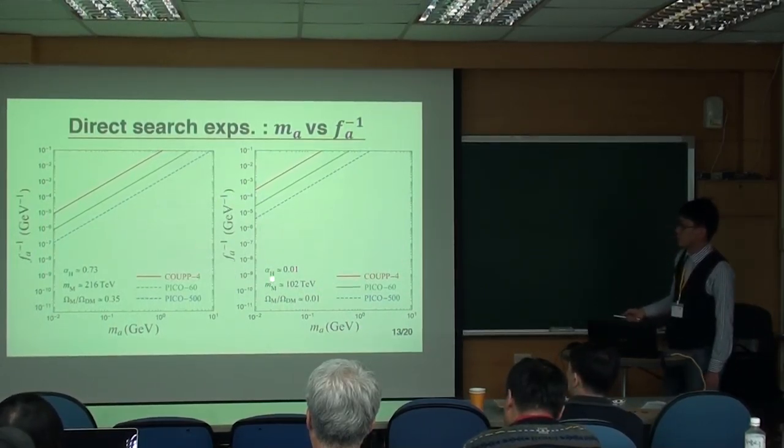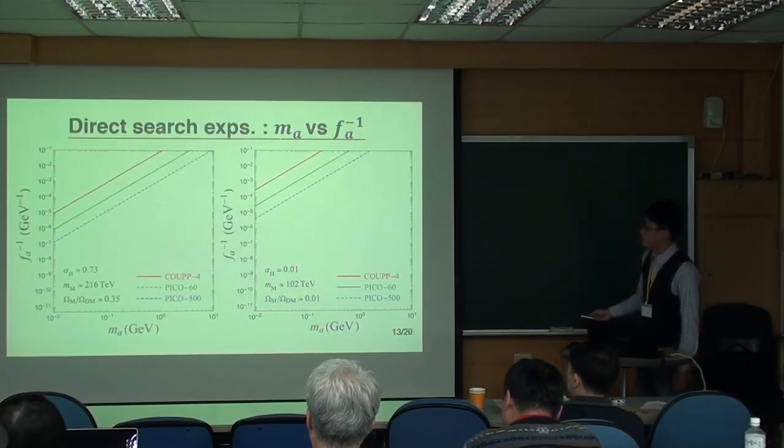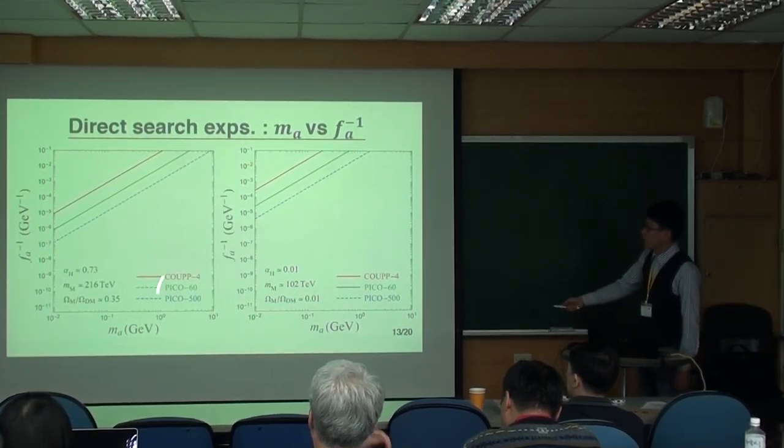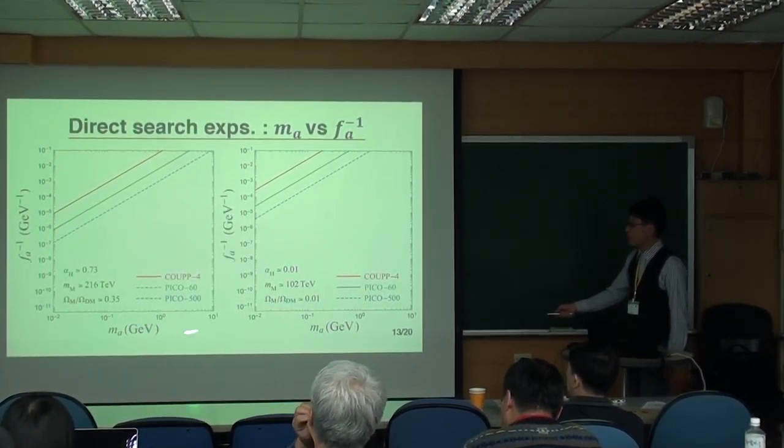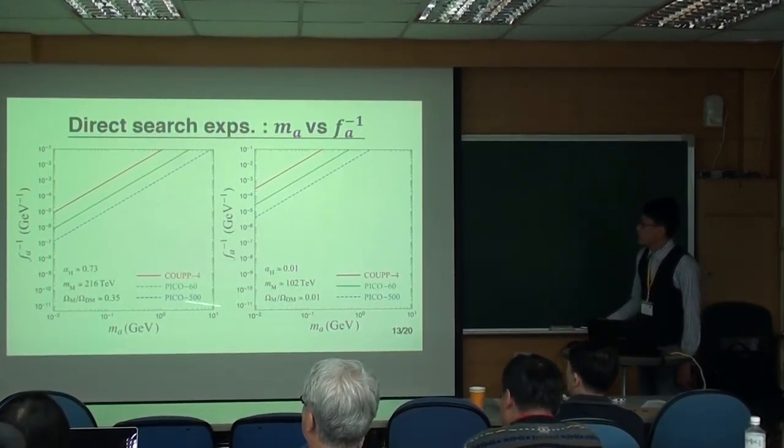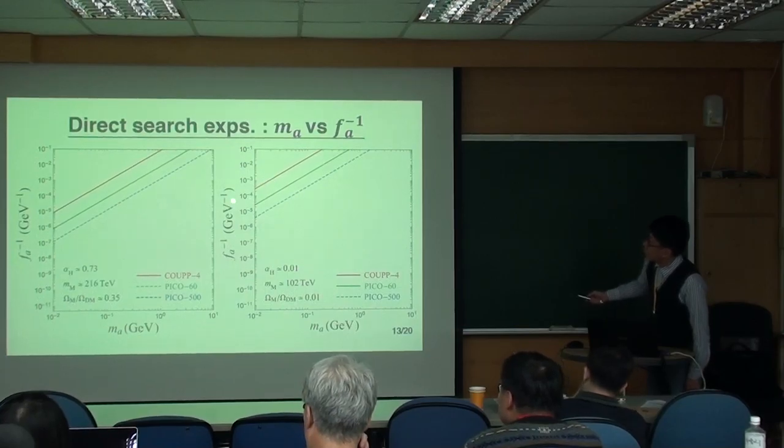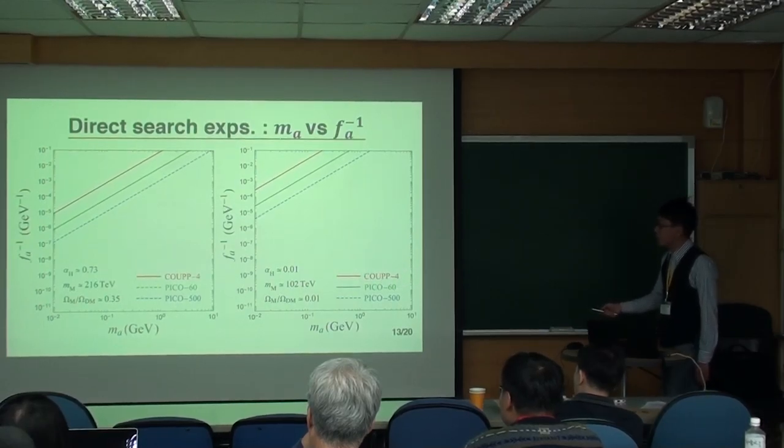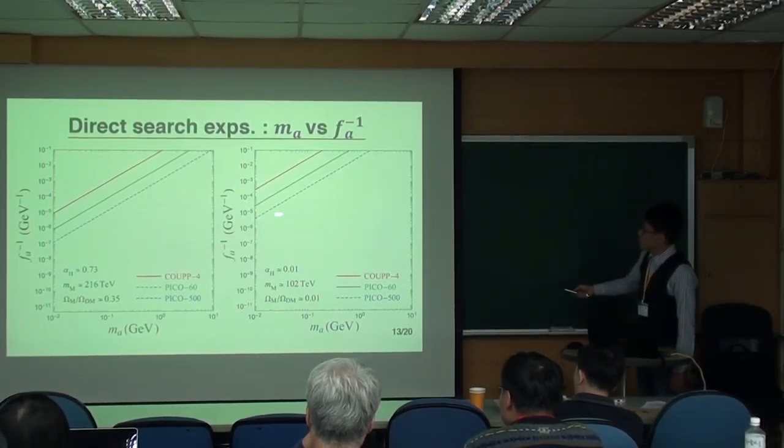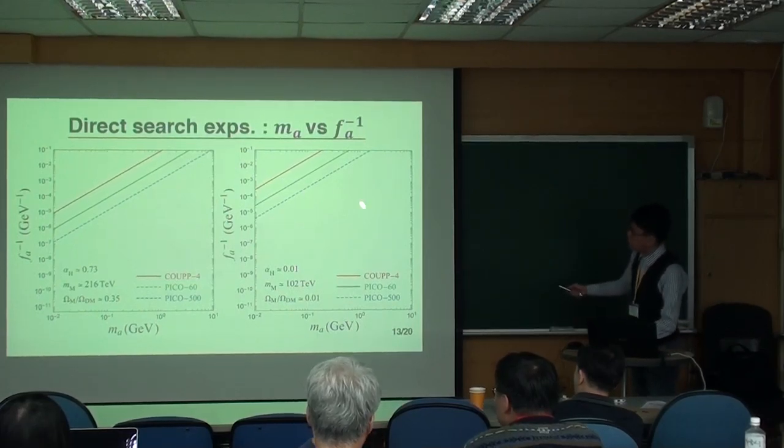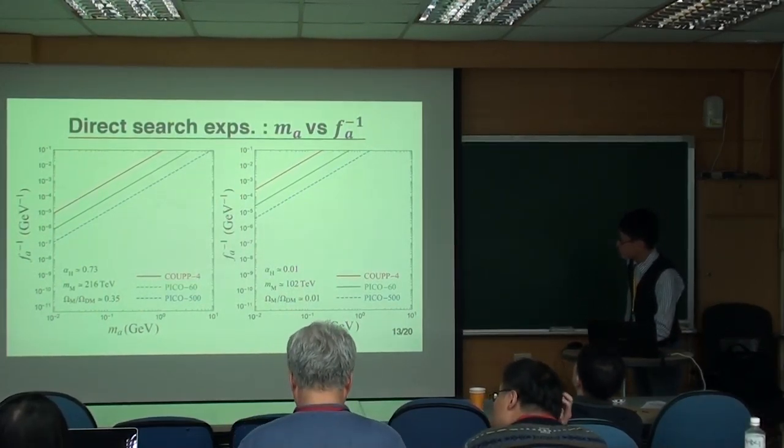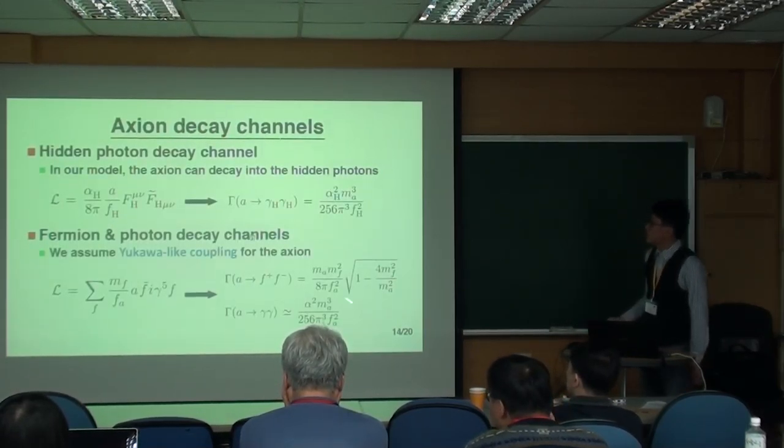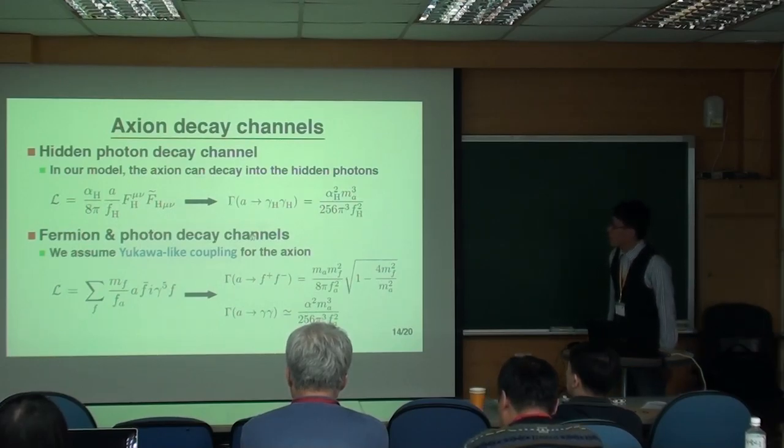Once you fix alpha_h and the monopole mass, and also theta_0, you can constrain the axion mass. So here's our result. We impose the constraints from the direct search experiments. And here I show you two benchmark points. So again, the y-axis is the constant, and the x-axis is the axion mass. This red region is already excluded by some experiments. And this red dashed line is some constraint from future experiments.